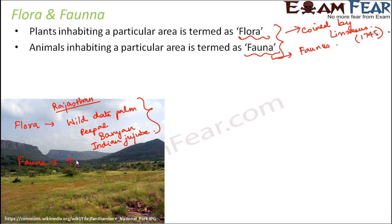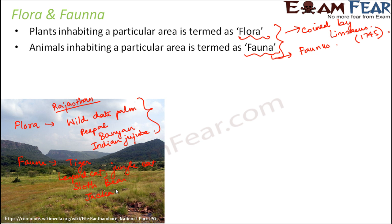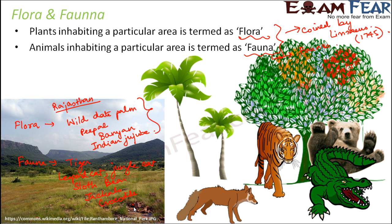Talking about the fauna of Ranthambore National Park: it is quite famous for tigers. We also see some varieties of wild cats like the leopard cat and the jungle cat. We see sloth bear, jackals, crocodiles, python, spotted deer, and nilgai. These are some of the very commonly seen animals in Ranthambore National Park, forming its fauna.